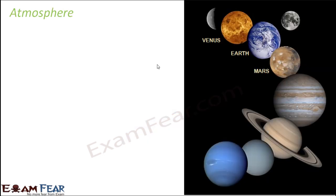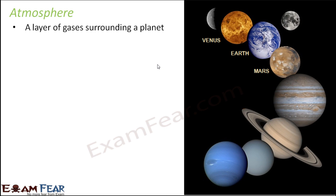Now, what is atmosphere? Air is present all around us, and atmosphere is the name given to the layer of gases surrounding a planet. For example, Earth is surrounded by a blanket of air, and that blanket of air is called the atmosphere.